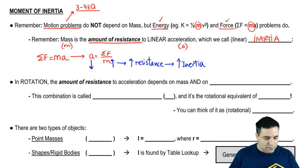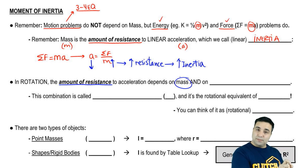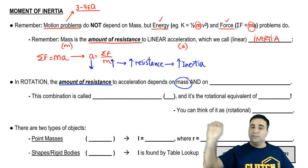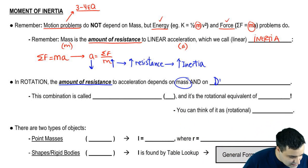Well, it's going to be the same thing in rotation. In rotation, the only difference is that the amount of resistance depends on mass and depends on something else. In linear motion, it depends only on mass. But in rotation, it depends on mass and it also depends on distance to axis.